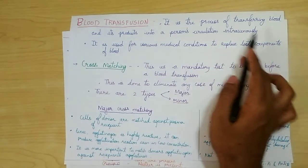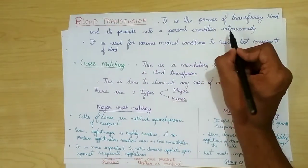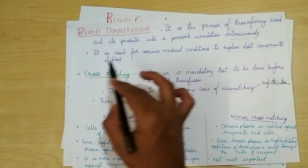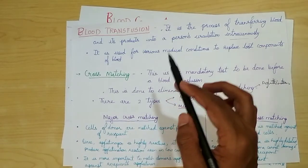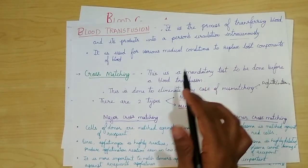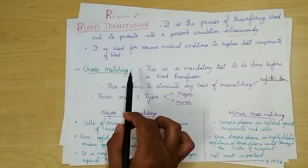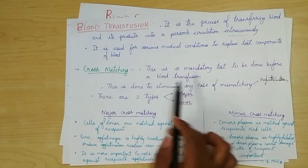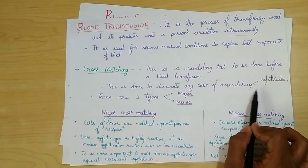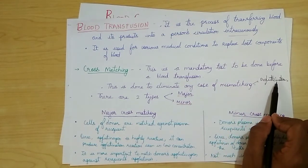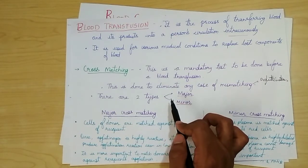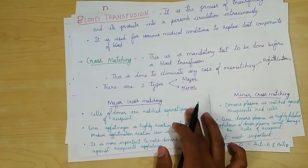Blood transfusion is the process of transferring blood and its products into a person's circulation intravenously. It is used for various medical conditions to replace lost components of the blood. Cross matching is a mandatory test to be done before a blood transfusion, mainly to eliminate any case of mismatching, since mismatching may lead to severe agglutination reactions and hemolysis.